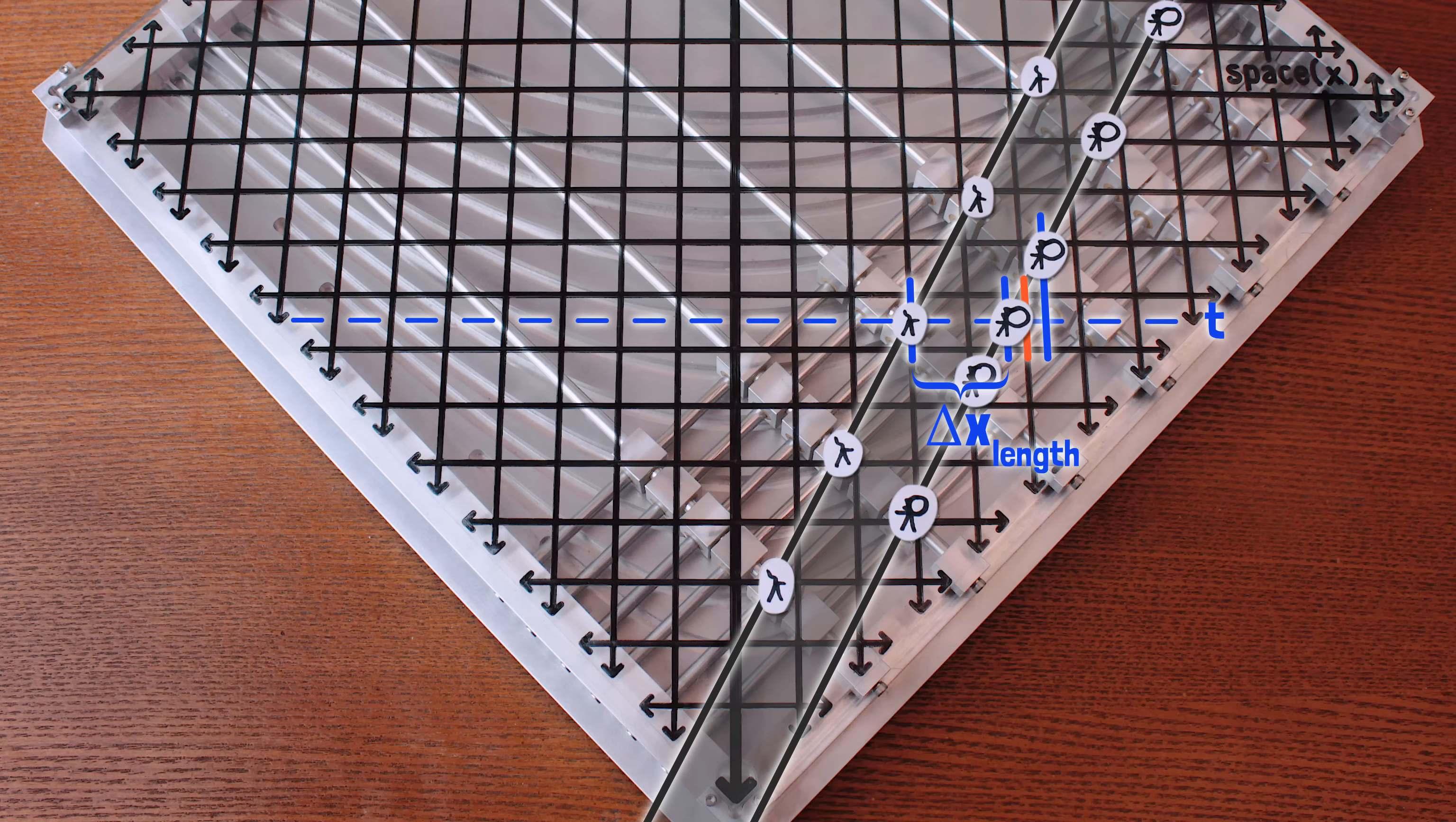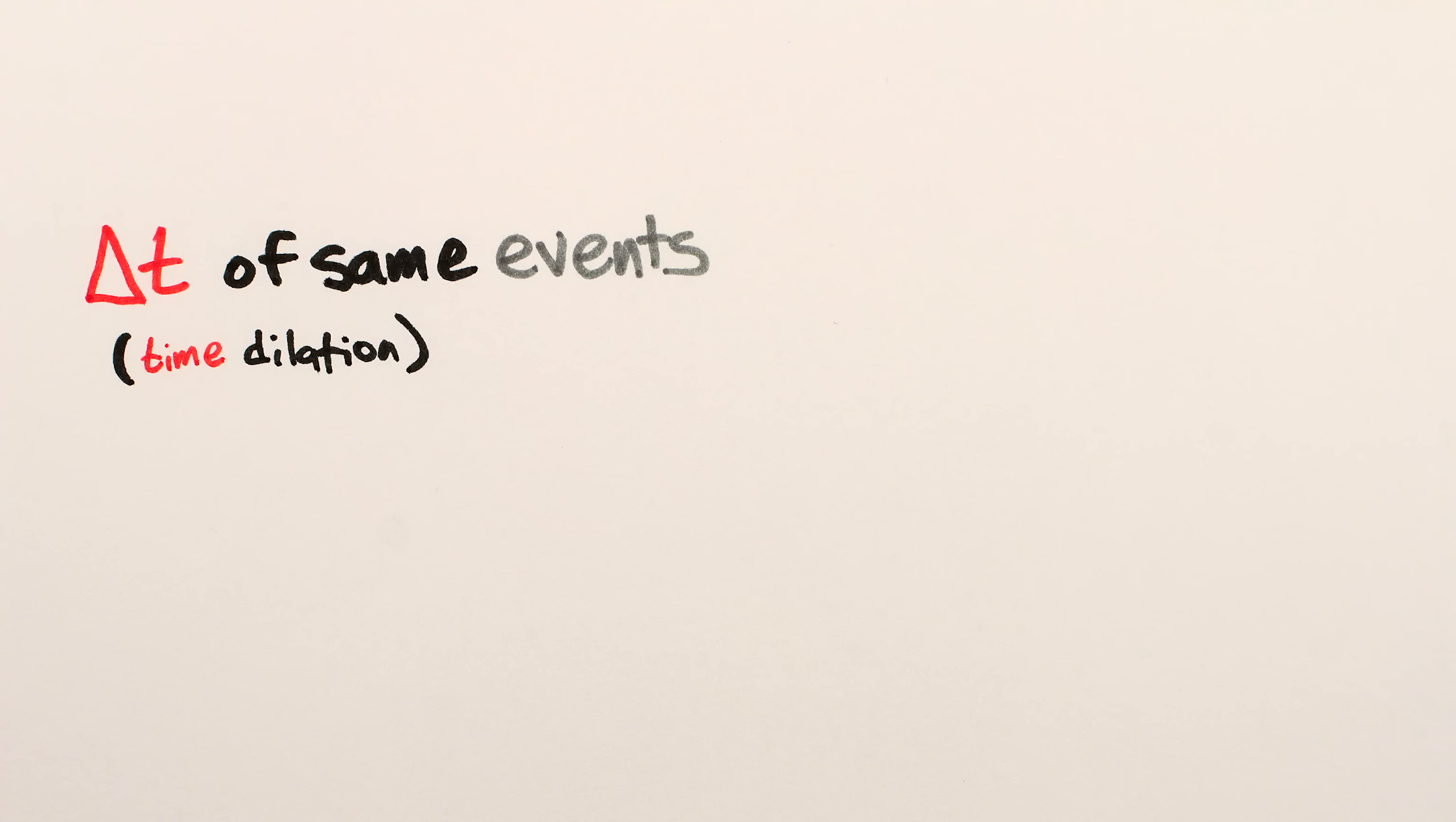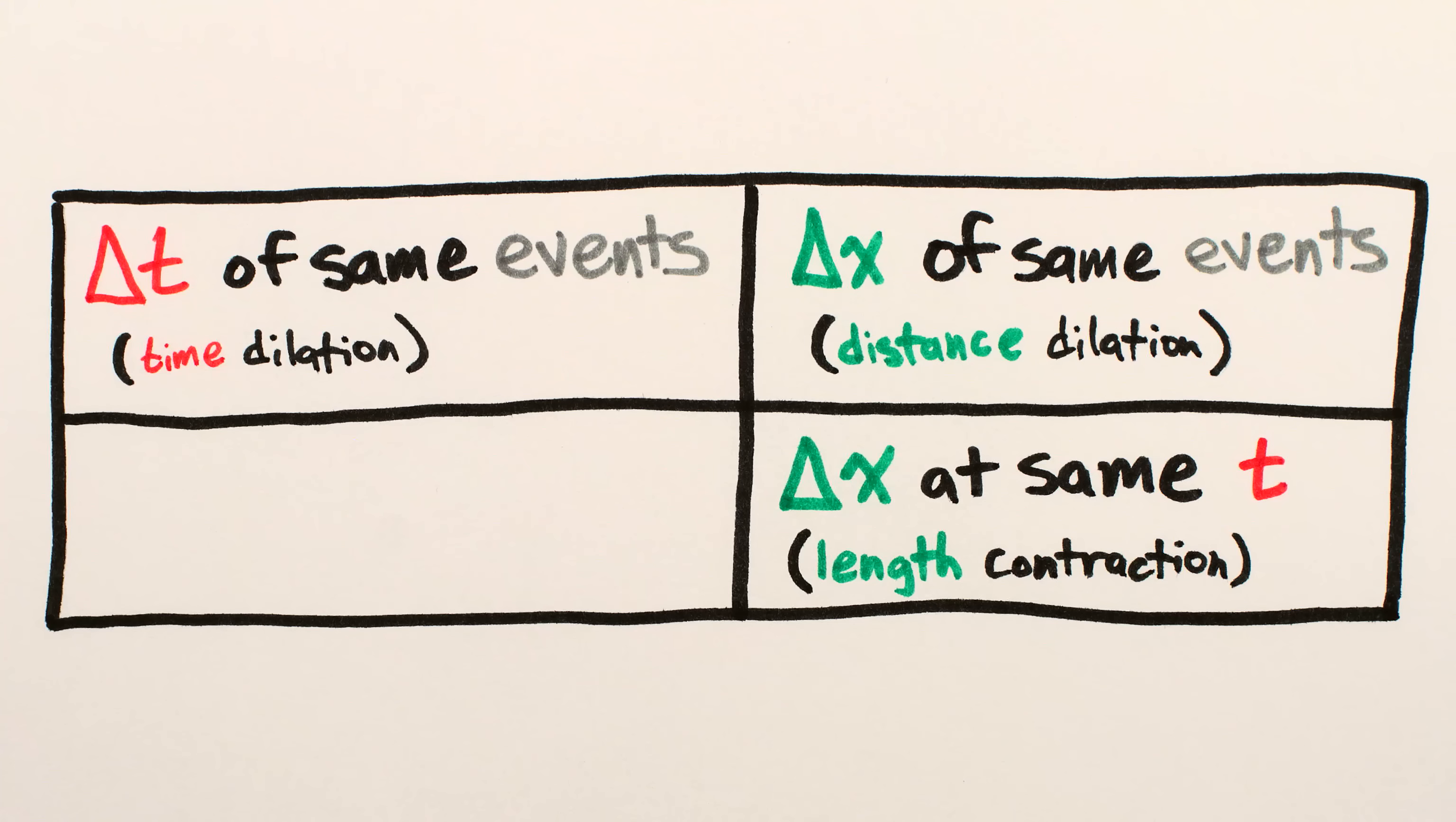This is what I meant when I said earlier that time dilation and length contraction aren't two sides of the same coin. Time dilation compares the times of the same events in the new perspective, and it pairs with distance dilation, which compares the positions of the same events in the new perspective. Length contraction, in contrast, compares positions at the same time according to the new perspective.